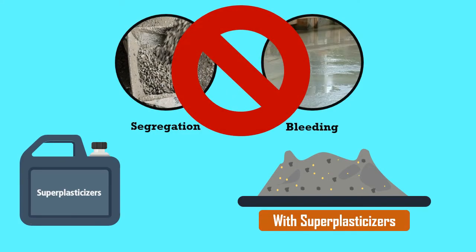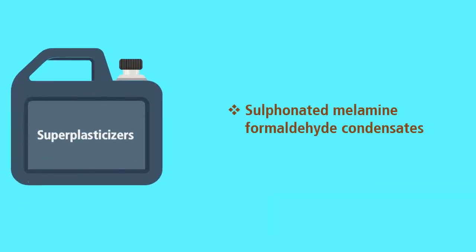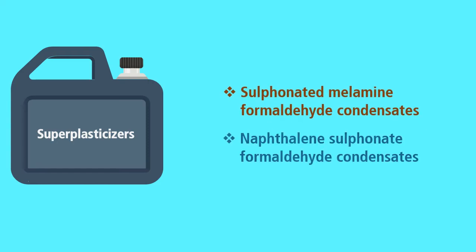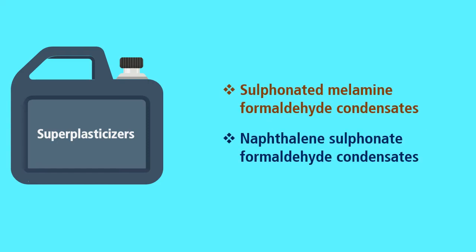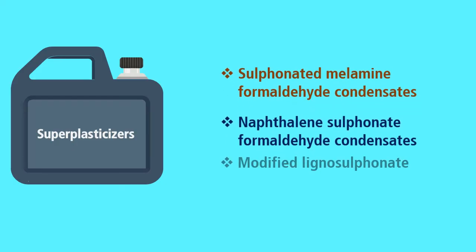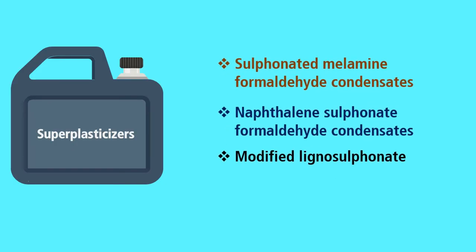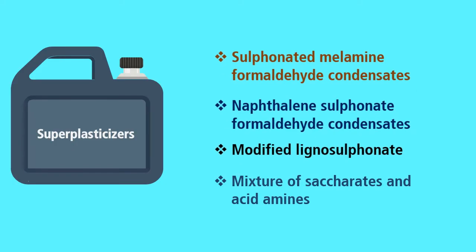Some examples of superplasticizers are sulfonated melamine formaldehyde condensates, naphthalene sulfonate formaldehyde condensates, modified lignosulfonate, and mixtures of saccharides and acid amines.